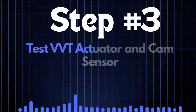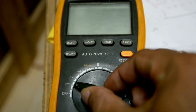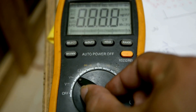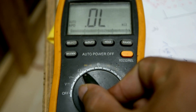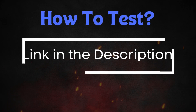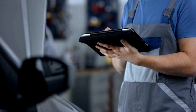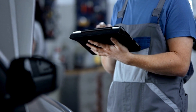Step 3: Test the VVT actuator and cam sensors. You can test the VVT actuator and cam sensors using a multimeter. The process can vary depending on the type of cam sensor you have. If your vehicle uses a hall effect sensor, the testing method will differ from that of a permanent magnetic sensor. To learn more about testing VVT actuator and cam sensors, check out our detailed video on this topic.